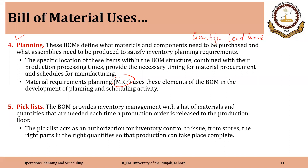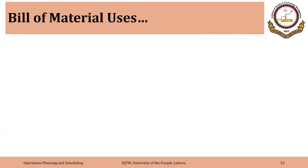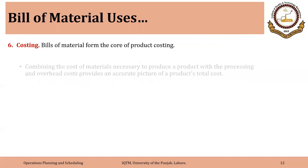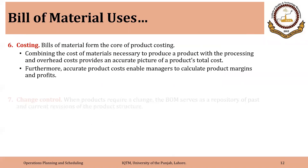The pick list acts as an authorization for inventory control to issue from stores the right parts in the right quantities so that production can take place completely. It could be assembling components to make the final assembly, or it could be packing different components in a certain quantity if the customer order requires that. Yet another very important use of bill of material is costing.